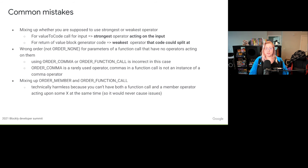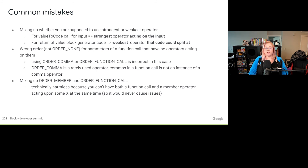Some common mistakes are mixing up whether you're supposed to find the strongest or weakest operator. As a reminder, you want to return the strongest operator acting on the input for value-to-code calls, and the weakest operator that the code could split at for the return of value block generator code. Often people use the wrong order for parameters of a function call that have no operator acting on them — order none should be used if there aren't any operators acting on the parameter, not order function call or order comma. The comma operator is a rarely used operator in JavaScript, and comma-separating parameters in a function call are not instances of a comma operator. Order member and order function call are also often mixed up; using the wrong one shouldn't cause code generation issues, but it's best to use the correct one for code clarity.